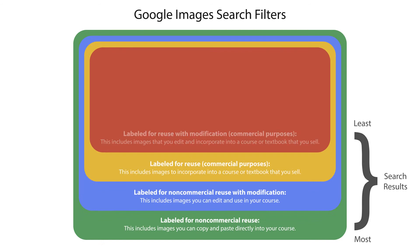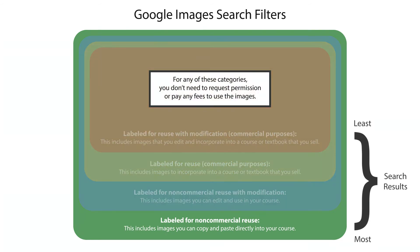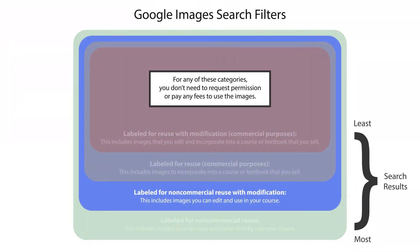Here's how the filters work. Those labeled for non-commercial reuse include images that you can copy and paste directly into your course, and tend to yield the most search results. Those labeled for non-commercial reuse with modification include images that you can edit and use in your course.